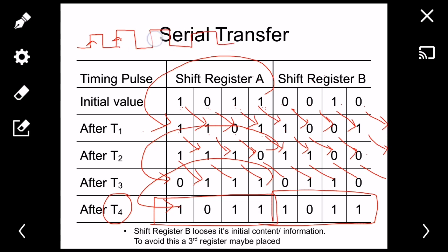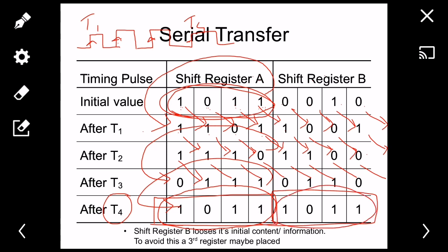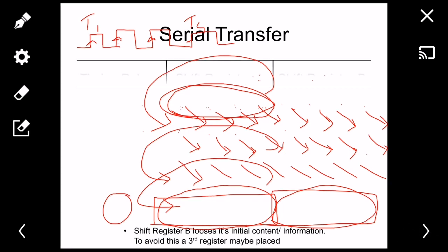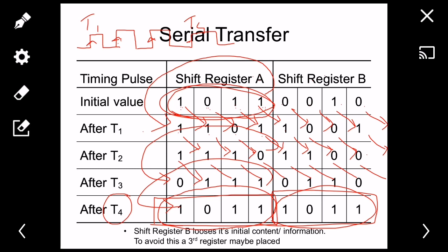After four clock pulses, Register A ends up with its original initial value because its output is connected back to its own input. Register B also ends up with the same initial value of Register A, because for a 4-bit shift register you need four clock pulses to transfer a value. So after four clock pulses, the content of A is preserved and the content of B equals the original content of A.